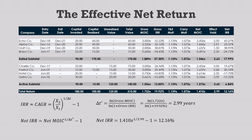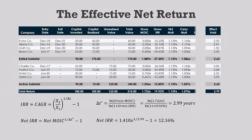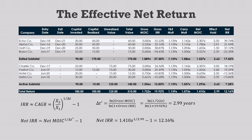Just like last time, we can easily switch this over to a deal-by-deal carry model. Rather than using the pooled carry multiplier of 1.073x, we calculate the multiple for each row independently using each deal's gross multiple. This gives us the deal-by-deal carry multipliers, which gives us the deal-by-deal net multiples, which gives us the deal-by-deal net IRRs.